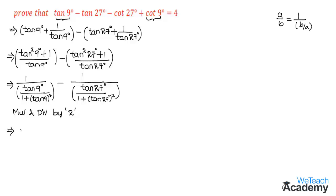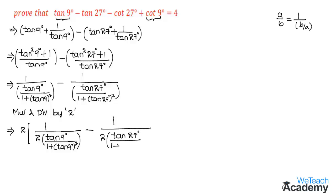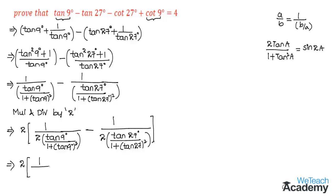By multiplying and dividing by 2, we get one-half times 2 tan 9 degrees divided by 1 plus tan squared 9 degrees, minus one-half times 2 tan 27 degrees divided by 1 plus tan squared 27 degrees. We observe that 2 tan A divided by 1 plus tan squared A equals sin 2A. Applying this double angle formula, we get 1 by sin 18 degrees minus 1 by sin 54 degrees, since 2 times 9 is 18 and 2 times 27 is 54, with the factor of 2 out front.